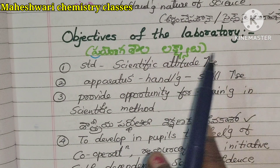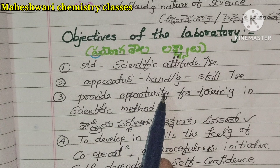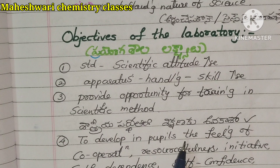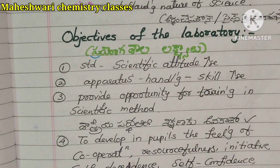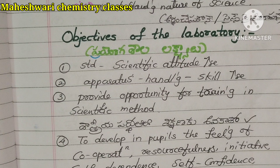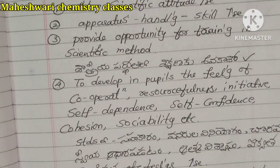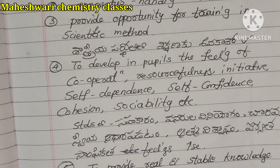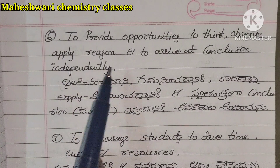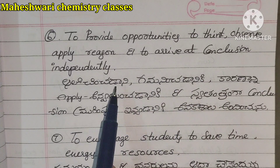Objectives of the laboratory. To provide real and stable knowledge of science. To provide opportunities to think, observe, apply, reason, and to arrive at conclusions independently.